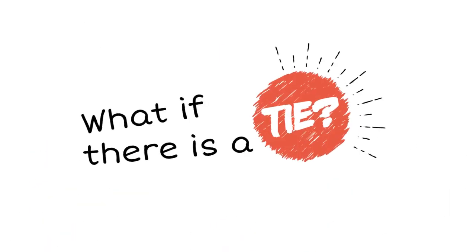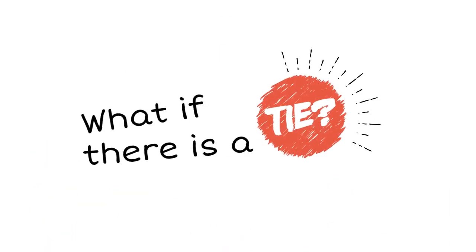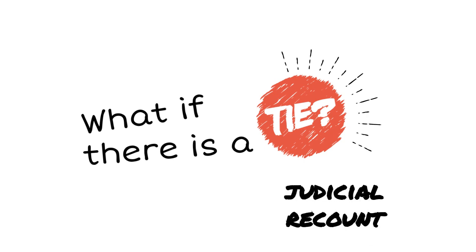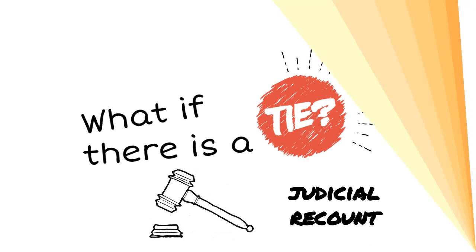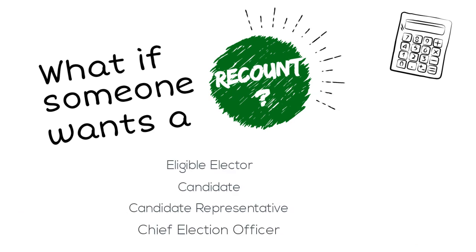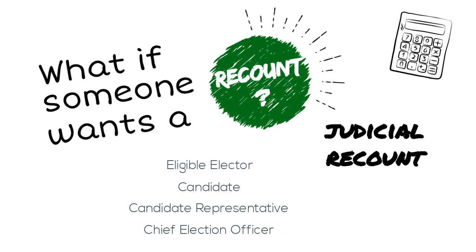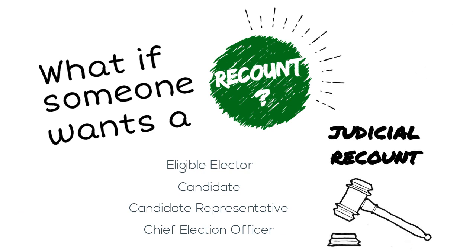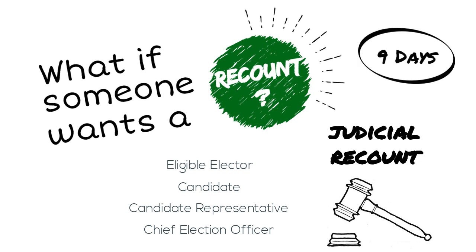If the same number of votes was received by two or more candidates, the Chief Election Officer must refer the election for a judicial recount. Under specific legislated circumstances, an eligible elector, candidate, candidate representative, or the local CEO may apply to the provincial court for a judicial recount. This application must be made within nine days of the close of general voting day.